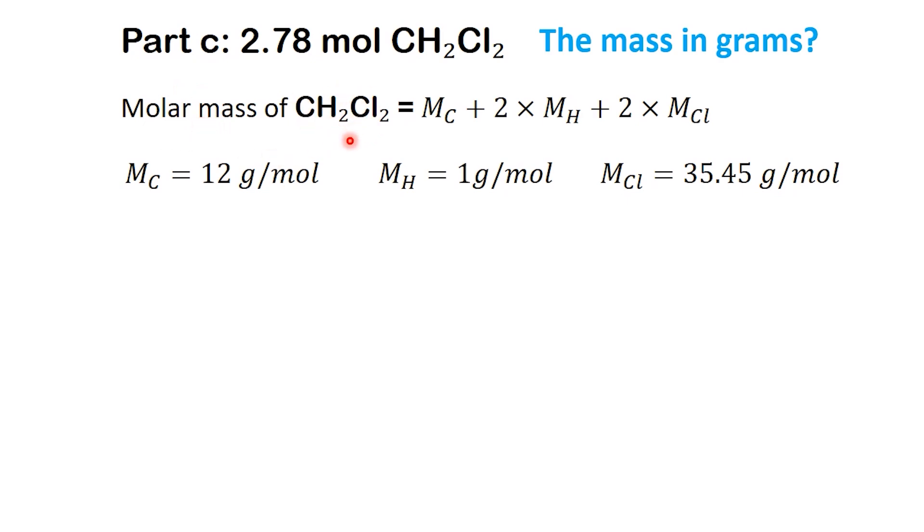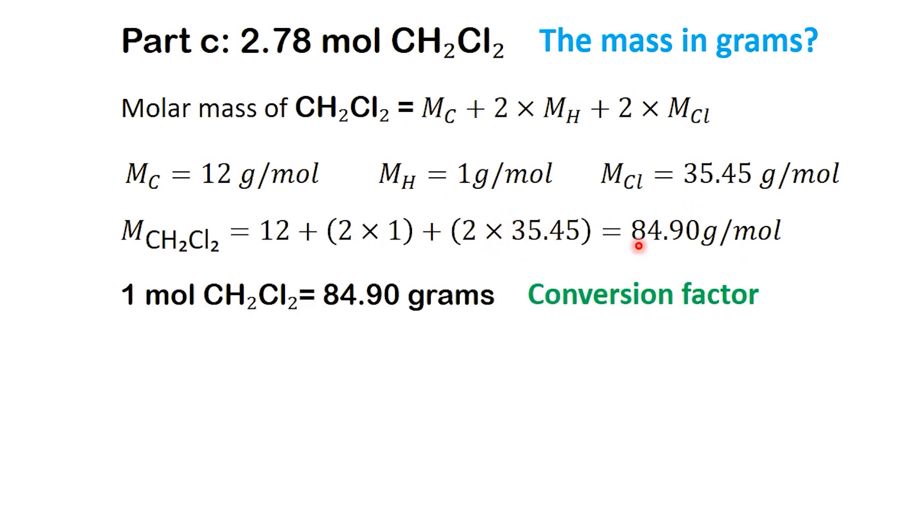CH2Cl2 contains 1 carbon atom with a molar mass of 12 grams per mole, 2 hydrogen atoms, each at 1 gram per mole, and 2 chlorine atoms, each at 35.45 grams per mole. So, we calculate molar mass of CH2Cl2 equals 12 plus 2 times 1 plus 2 times 35.45, which gives 84.90 grams per mole. So now we know, 1 mole of CH2Cl2 equals 84.90 grams.